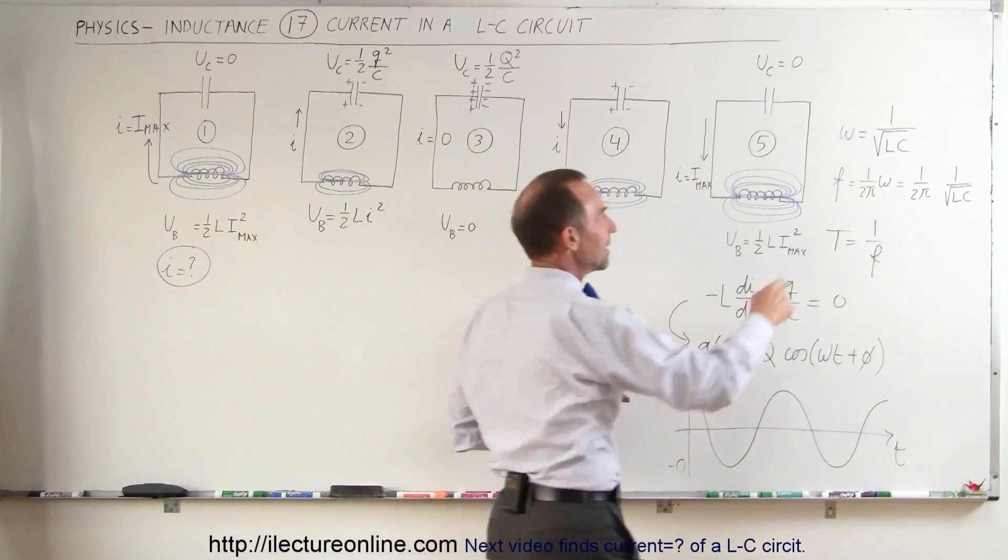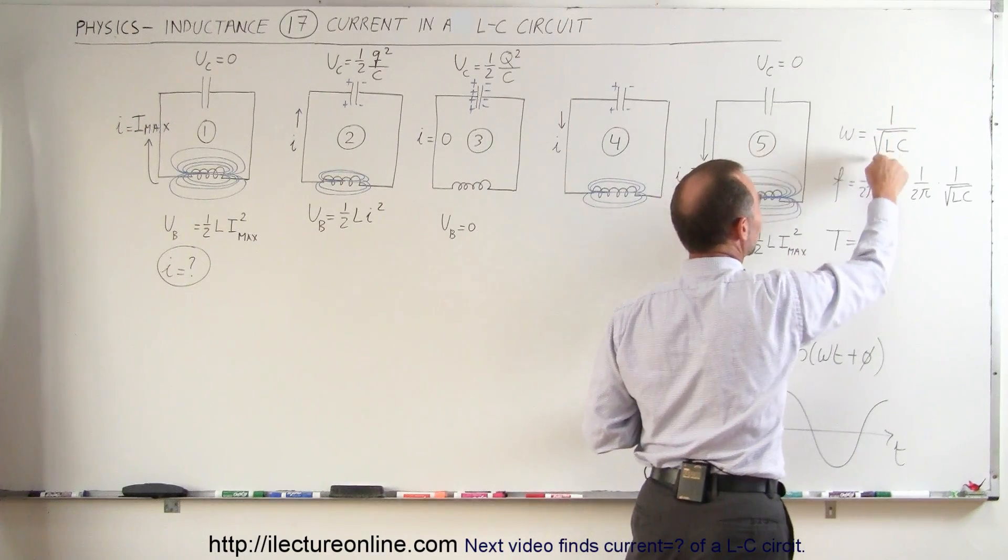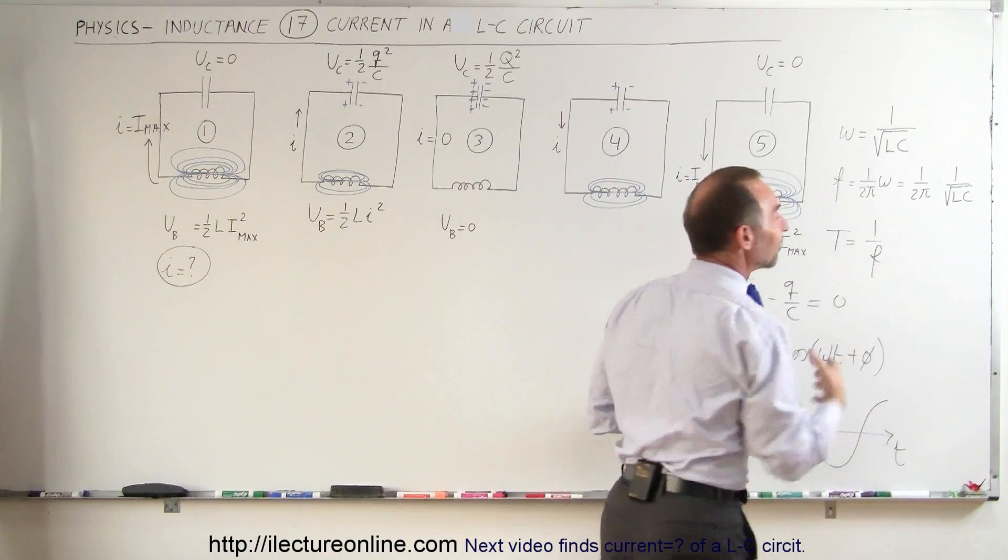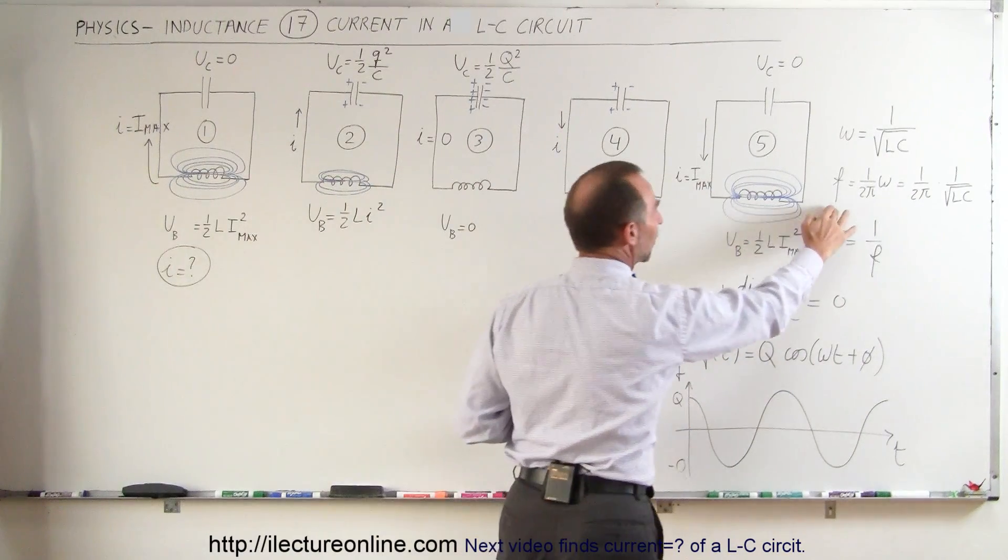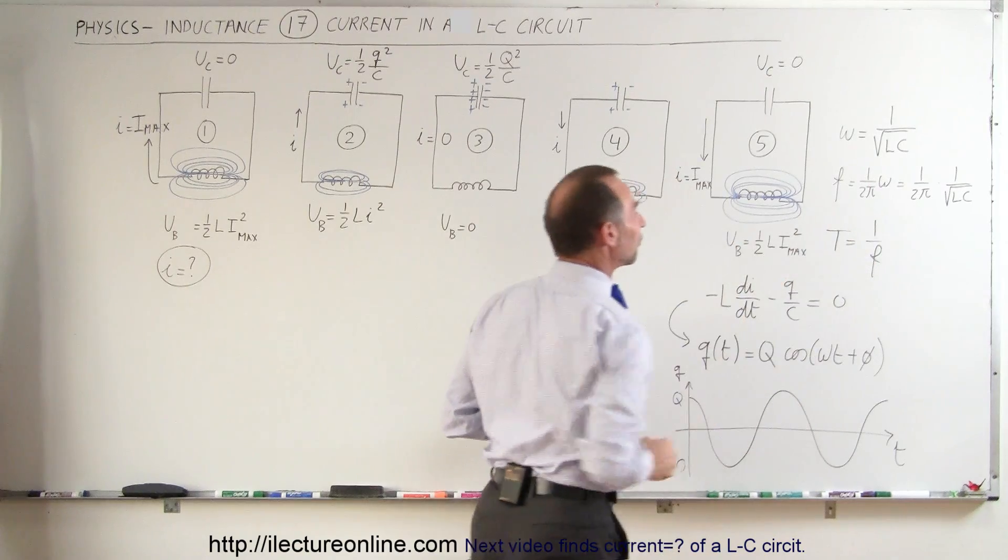Also realizing that the angular frequency of the oscillatory motion is one over the square root of L times C, L being the size of the inductor and C being the size of the capacitor, which gives us the frequency of oscillation and the period being one over the frequency.